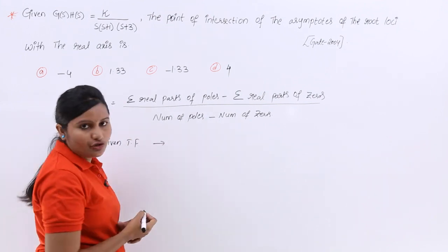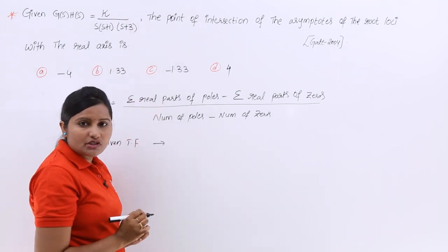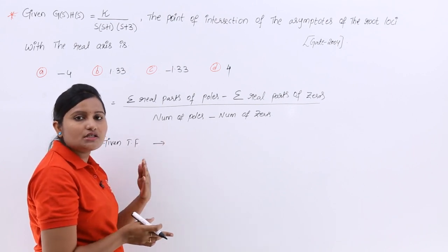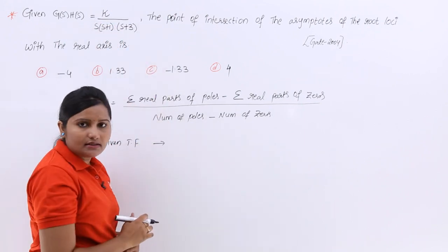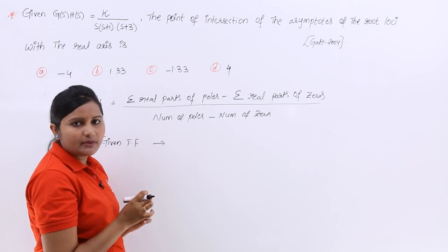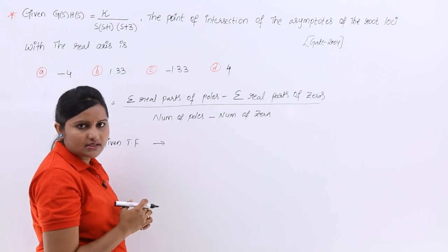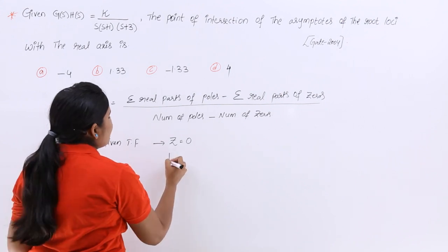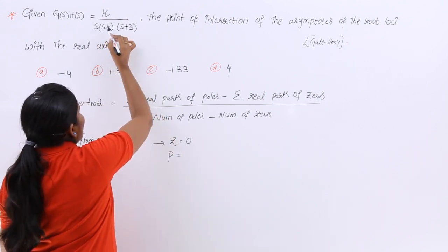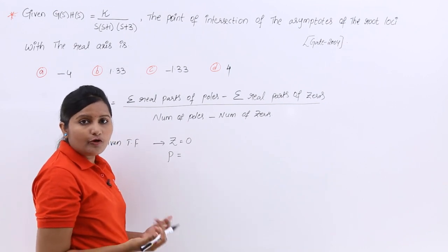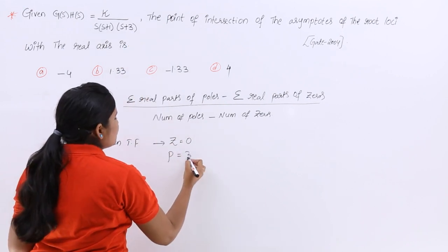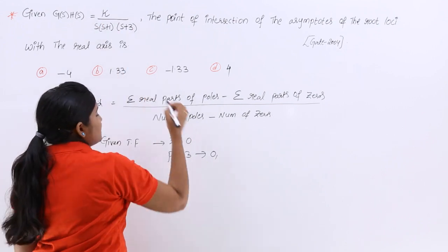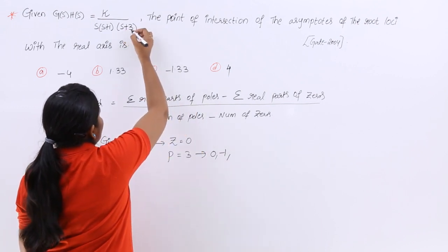To find zeros, observe the numerator of the open loop transfer function. Here the numerator has no zero terms — only K as a scalar multiplication factor — so there are no zeros. For poles, count the s-terms in the denominator. There are three poles: s gives pole at 0, (s+1) gives pole at -1, and (s+3) gives pole at -3.